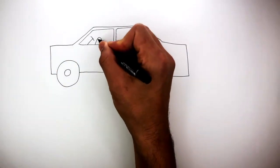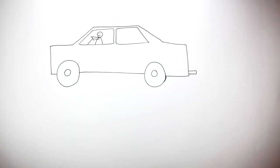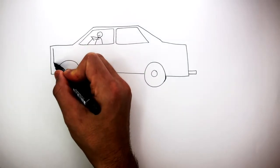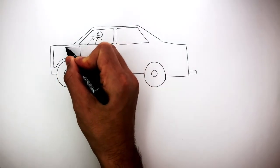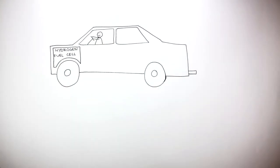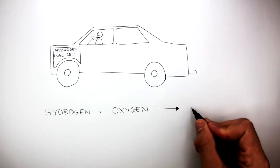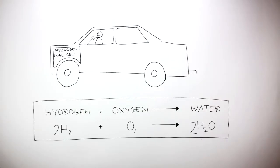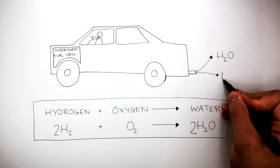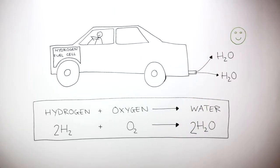Here I'm drawing a car — not all cars run on petrol and diesel. In this example, this car has an engine which has a hydrogen fuel cell. A hydrogen fuel cell produces electricity by reacting hydrogen and oxygen to form water, and this is the balanced symbol equation. The electricity generated allows the car to drive, and the only gas produced in this chemical reaction is water, which is a good thing as water is not a major greenhouse gas.